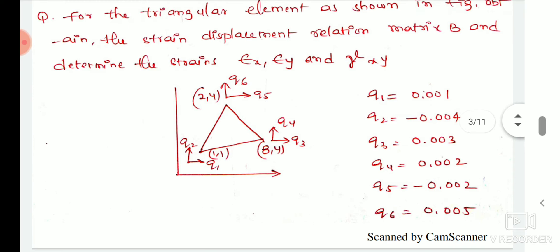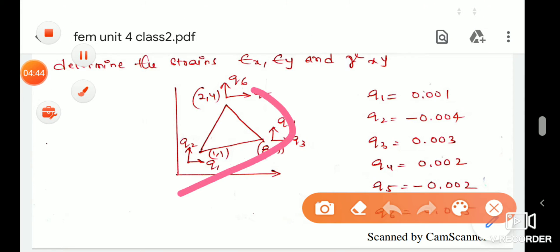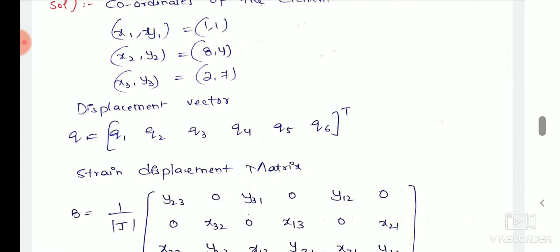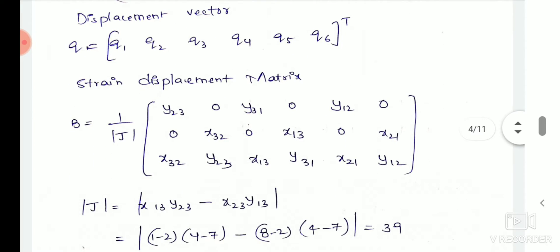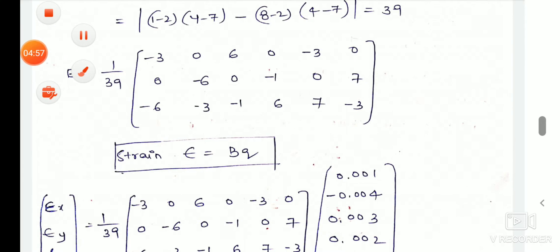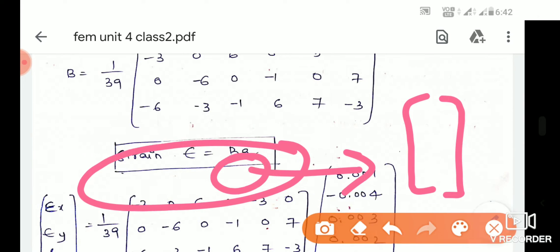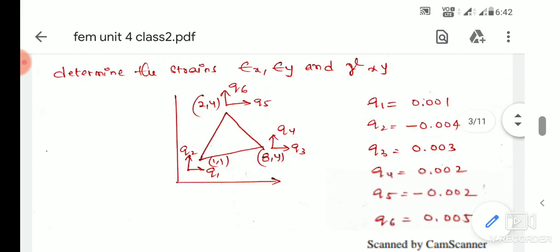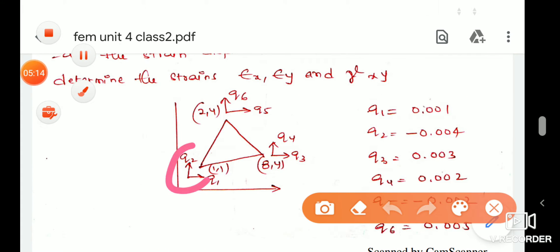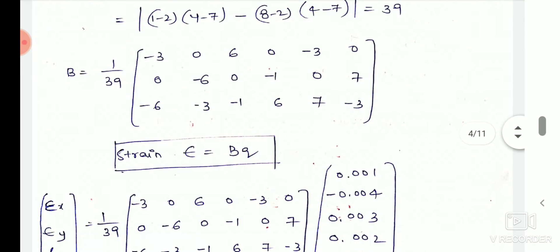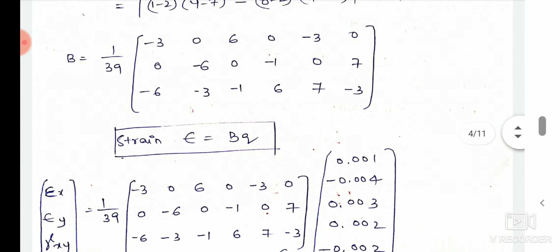We have to find the final values. Now we have to find the displacement values. This is the formula: displacement is B into Q. This is the displacement matrix — a column matrix. In each node we have two displacements. There are three nodes into two displacements, so we have six values. So Q is a column matrix, one to six.